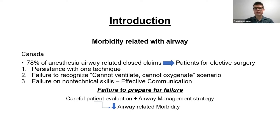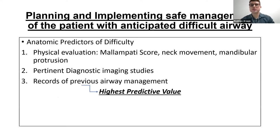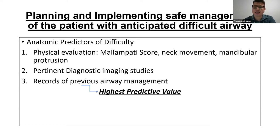It's a failure to prepare for failure. When you don't have a plan for airway management, we're going to have a bad situation. With careful patient evaluation and an airway strategy, we can reduce airway-related morbidity. Our first step should be the airway evaluation: we start with anatomic predictors of difficulty, then assess the physiologic issues of the patient, then analyze the clinical context. The anatomic predictors include the classic Mallampati score, neck movement, and mandibular protrusion. We also look at pertinent diagnostic imaging studies, especially for patients with neck or head disease. The records of a previous airway management have the highest predictive value for a difficult airway.